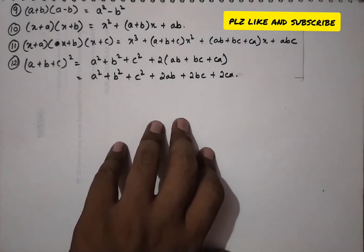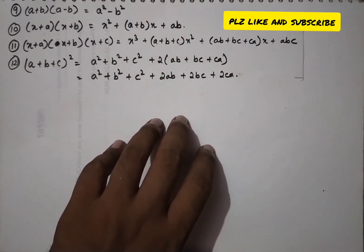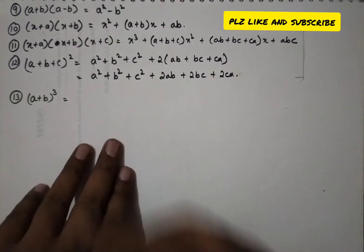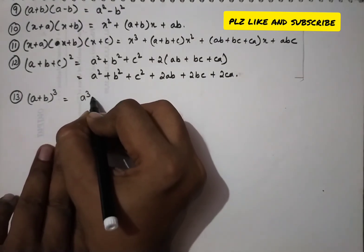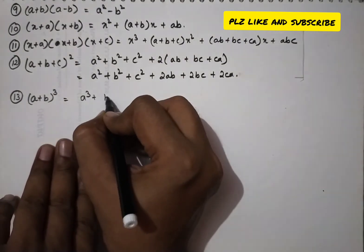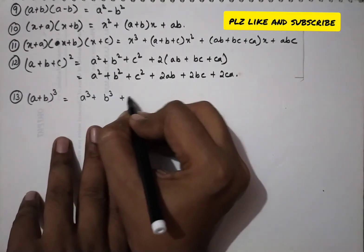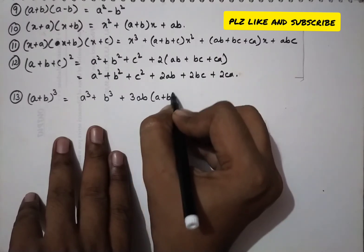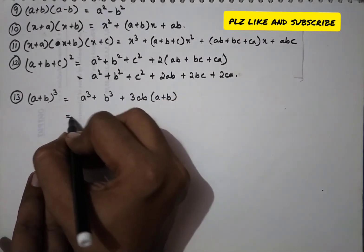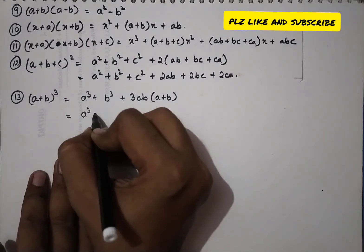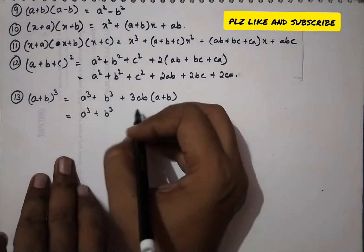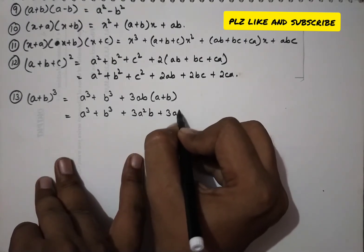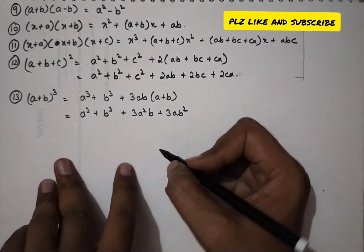The next identity is (a + b) whole cube. In this case we have a³ + b³ + 3ab(a + b), which expands to a³ + 3a²b + 3ab² + b³.